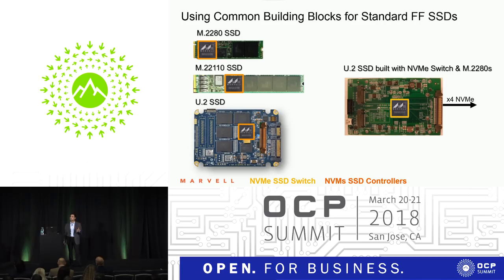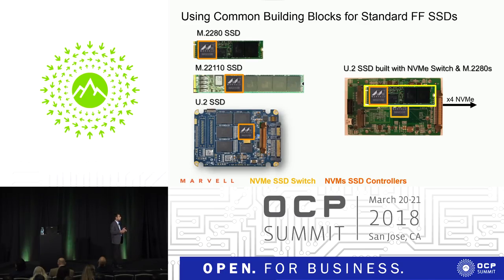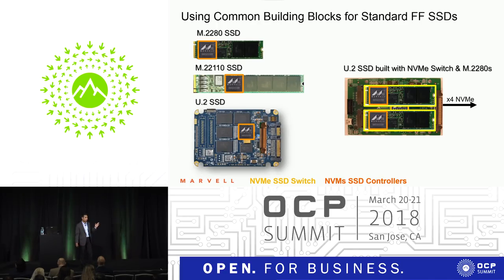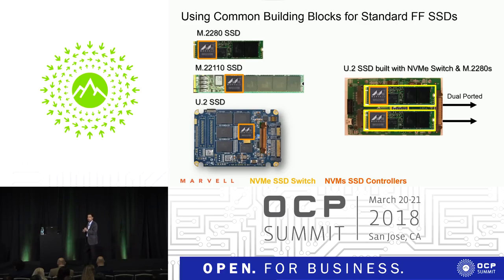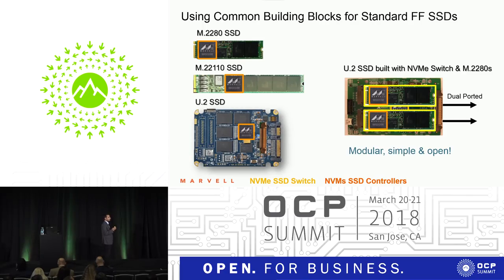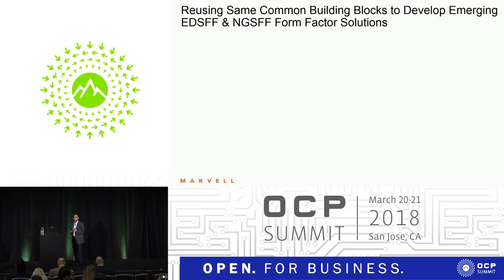Here's one example of innovation: put that NVMe switch in a U.2, and you can actually create a scalable M.2s inside that drive. With one M.2 you get started, then add another M.2 and you get a by four if you wanted. Our NVMe switch will virtualize all that storage behind it and give you multiple namespaces to access over the NVMe protocol. You can make it by four or make it dual ported — really enabling a lot of flexibility and innovation. From an OCP perspective, what's cool about this is it's modular, simple, and open. We're here to drive volume and scale to get the economics out of the equation — having common building blocks that you can leverage across different form factors and into the new form factors.